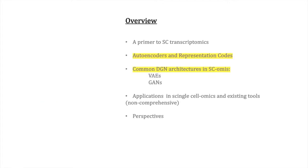So now I will switch gears and talk a little bit about autoencoders, which, as I mentioned, were historically the first models applied to single-cell transcriptomics. I will also introduce representation codes, and then I will talk about variational autoencoders and adversarial networks.